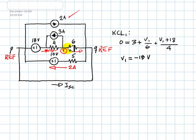With V1, we determine this current. This current is negative 18 divided by 6. This current is negative 3 amps.